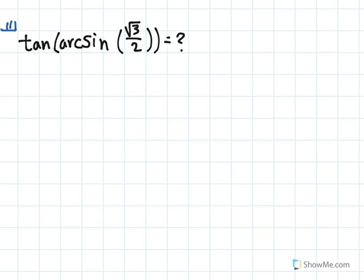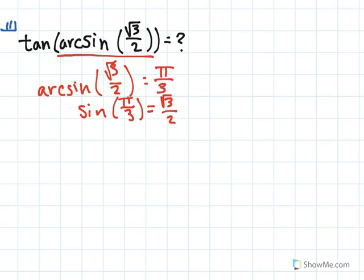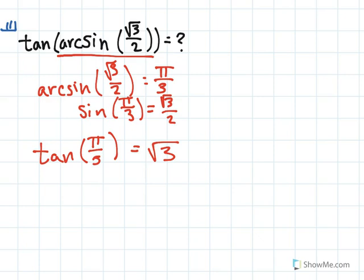In this problem we're given tangent of arc sine of root 3 over 2 and we're asked to find the exact value. We can treat this in two parts. First, arc sine of root 3 over 2: we know that sine of pi over 3 equals root 3 over 2, so arc sine of root 3 over 2 equals pi over 3. Now we have tangent of pi over 3, which equals the square root of 3. So the final answer is the square root of 3.